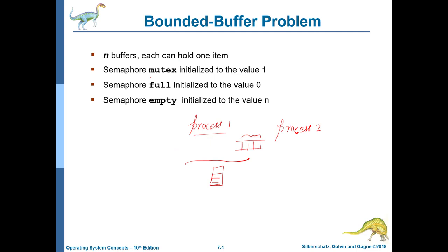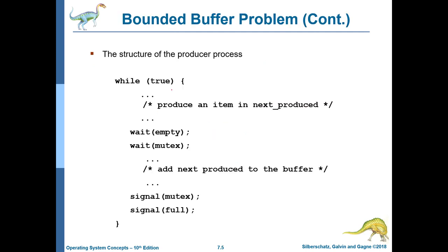We have a semaphore called mutex, a semaphore called full, and a semaphore called empty. Empty is initialized to n because at the beginning n buffers are empty. Full is initialized to 0, and mutex is initialized to 1 — meaning the buffer access code is free and nobody has taken the lock. We will have a producer process and a consumer process.